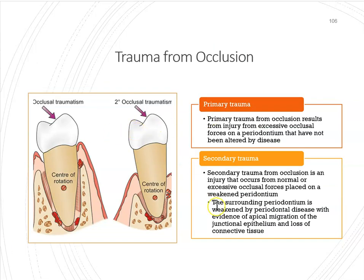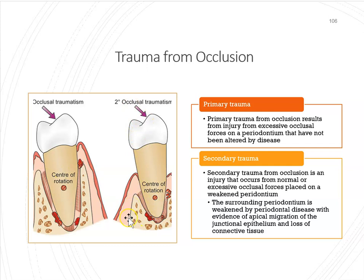Primary occlusal trauma is when you're grinding in an area that has no previous bone loss — an area never affected by periodontitis. Secondary occlusal trauma is grinding in an area that has already been affected by periodontitis, where the bone level has been reduced. When you're putting a lot of pressure on an area that has already been damaged by periodontitis, that is considered secondary trauma.